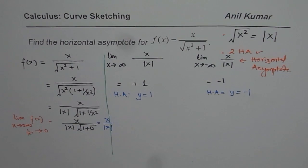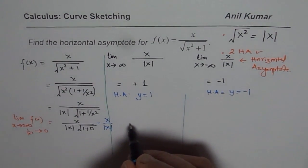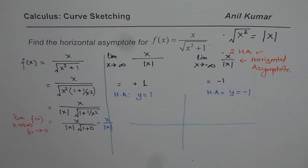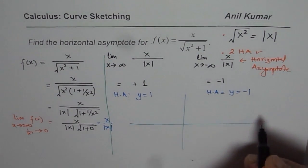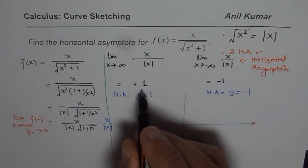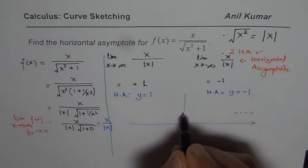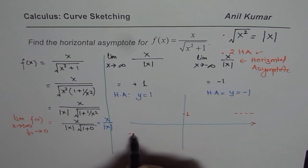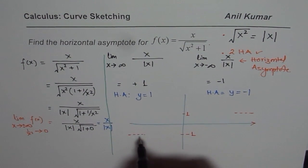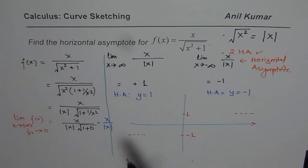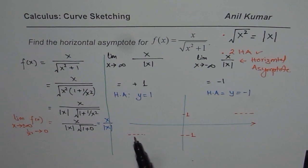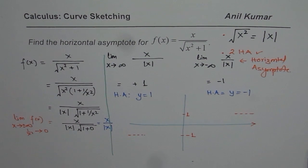So that is how you should be solving it. Let me also sketch this — just the horizontal asymptotes, not the full graph. What we are saying is: when x approaches positive infinity, the function approaches 1. When x approaches negative infinity, the function approaches -1. So this particular function has two horizontal asymptotes: one is y = 1, and the other is y = -1.